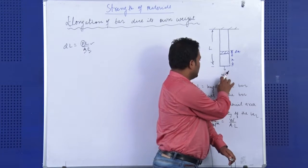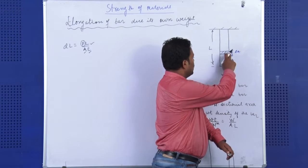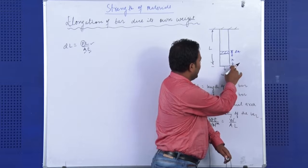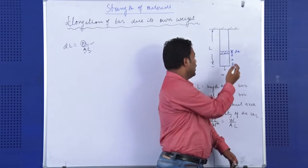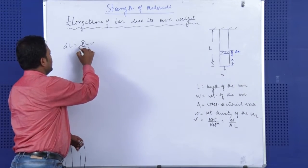At the bottommost section, the total weight or total force acting over here is W. If I go at this length, at a length of X from the bottom, the weight would be different, and in this way I can say that this P is changing at different different point.